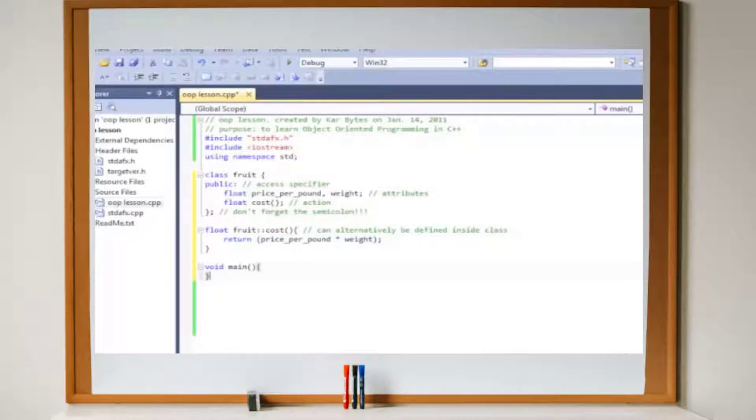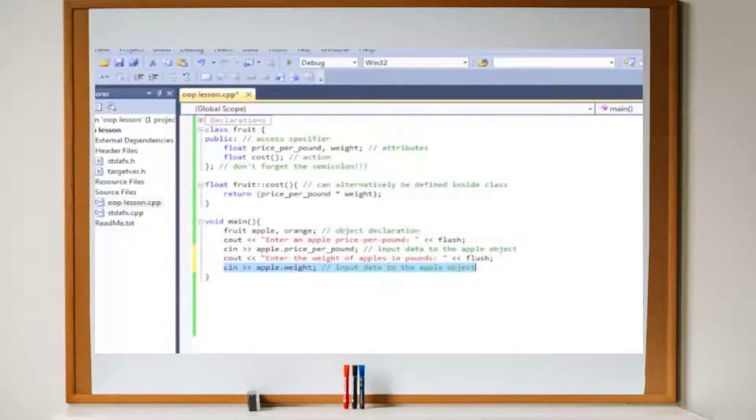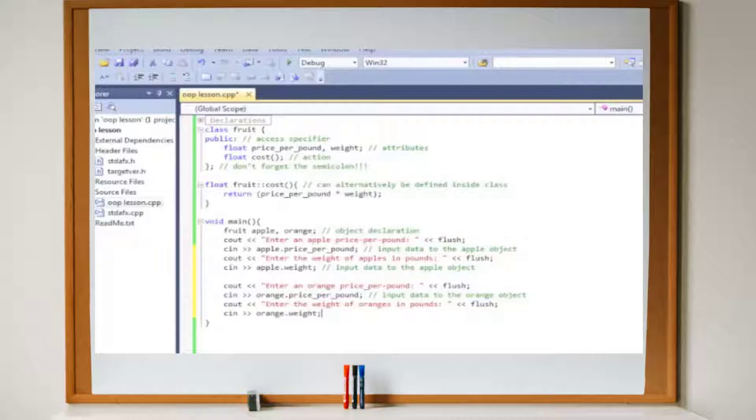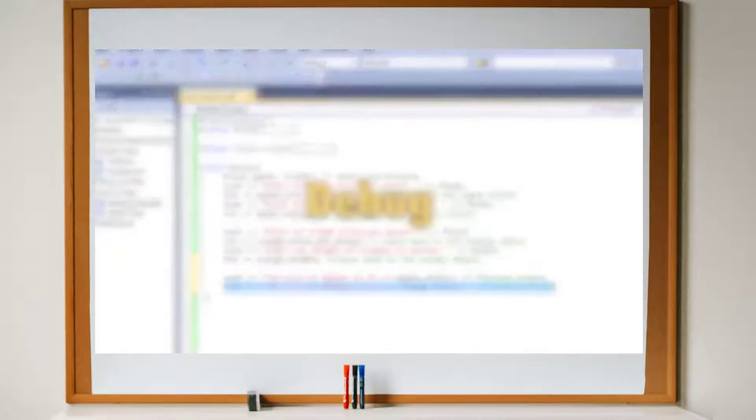Set up the main function. Apple and orange will be objects of the fruit class. We'll use cin and cout statements to allow the user to enter data about apple, the price per pound and the weight. Likewise we'll do the same for object orange. The function of the fruit class will output the cost of each fruit.